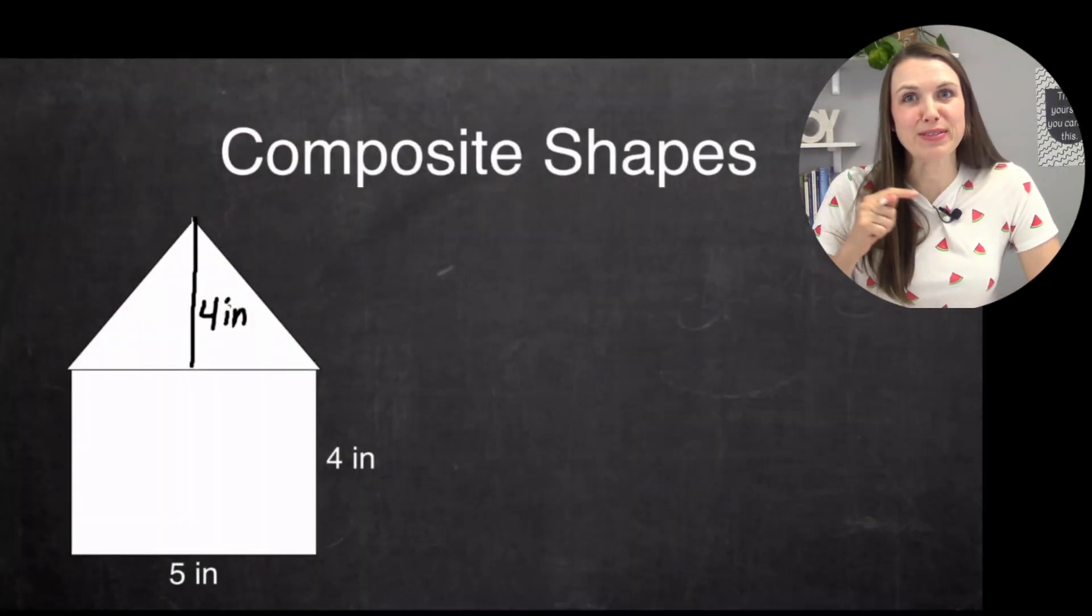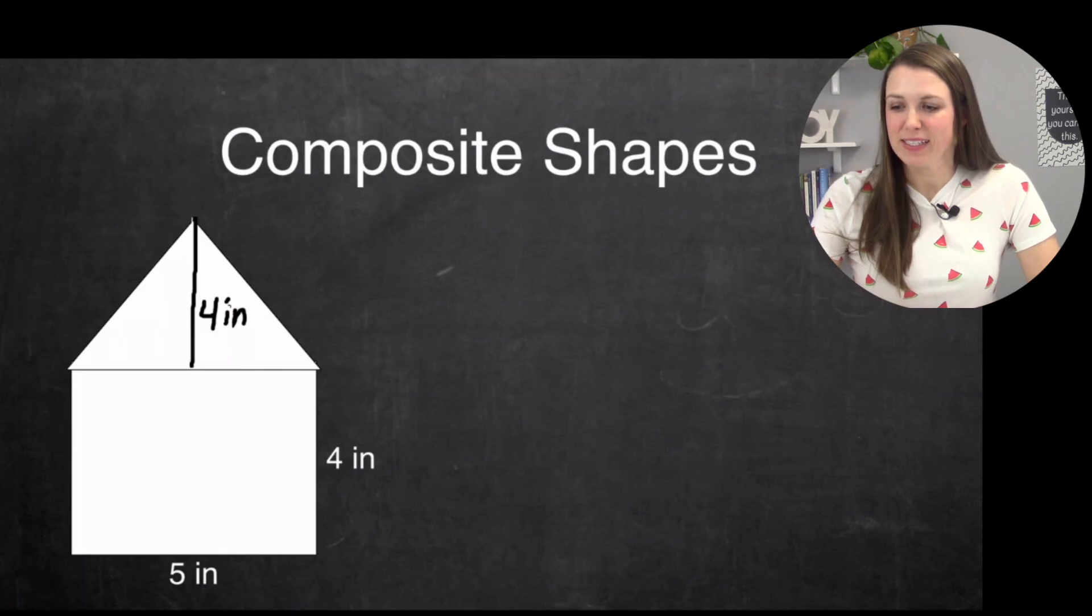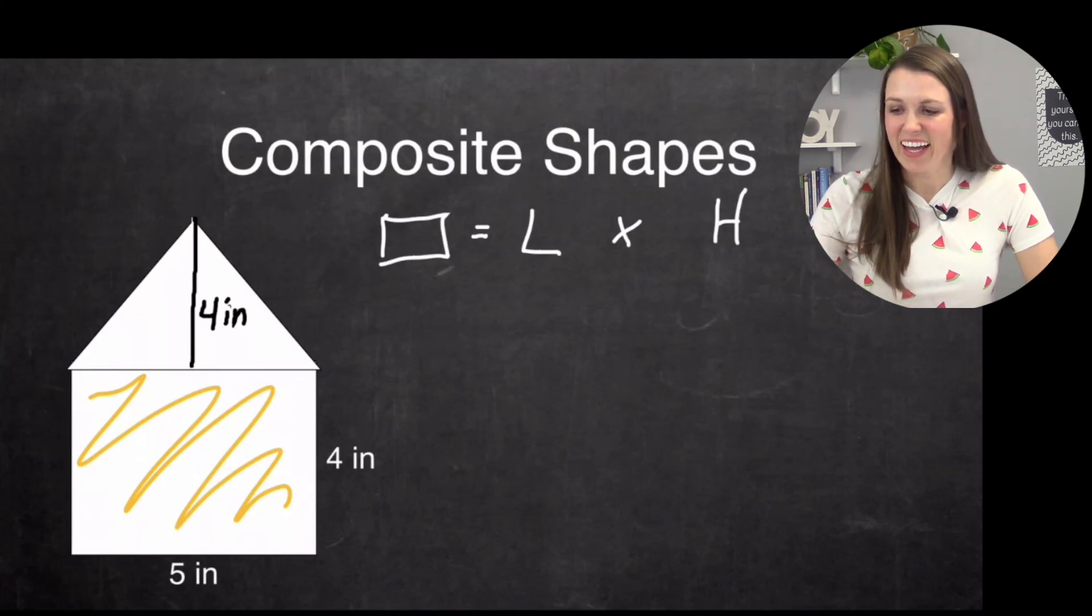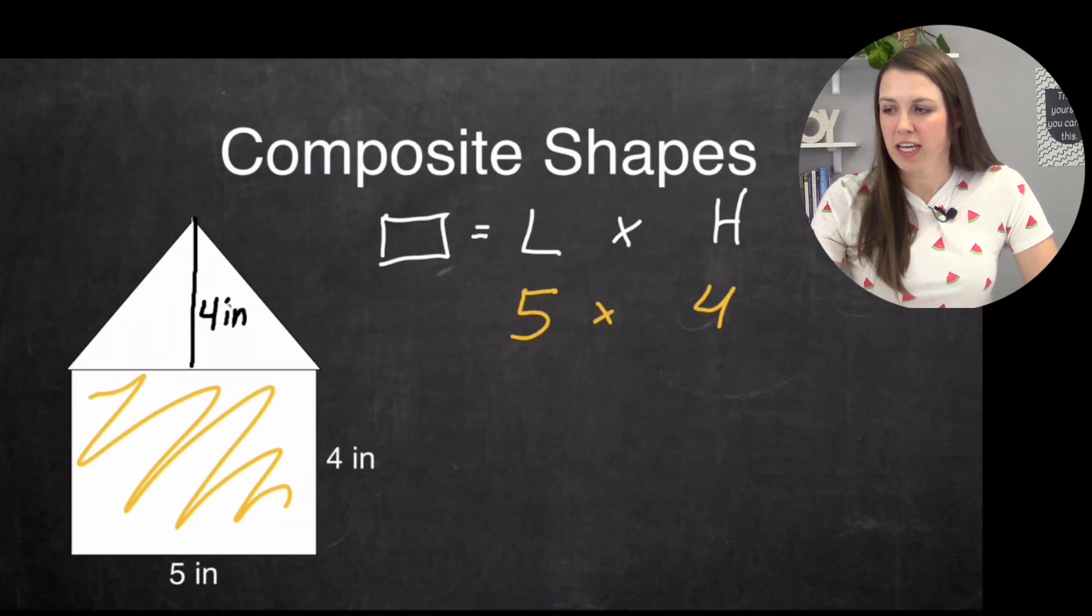Another practice with our house or our rocket ship. So I'm going to start off with my rectangle at the bottom. So we have area of the rectangle equals length times height. So I have simply five times four, which equals 20.